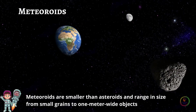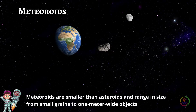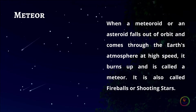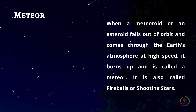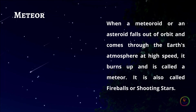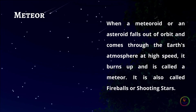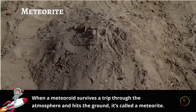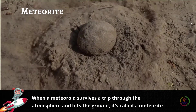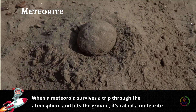Meteoroids. Meteoroids are smaller than asteroids and range in size from small grains to 1 meter wide objects. When a meteoroid or an asteroid falls out of orbit and comes through the Earth's atmosphere at high speed, it burns up, and this is called a meteor — also called fireballs or shooting stars. When a meteoroid survives a trip through the atmosphere and hits the ground, it's called a meteorite.